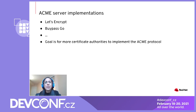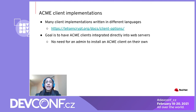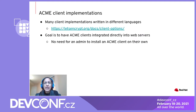Now that we understand how the ACME protocol works, let's look at available implementations. On the server side, Let's Encrypt is the most well-known Certificate Authority that implements ACME; Buypass Go is another example. The goal is for more CAs to implement ACME. On the client side, there are many implementations written in many different programming languages, and the goal is to have ACME clients integrated directly into web servers so administrators don't need to worry about installing or choosing a client.